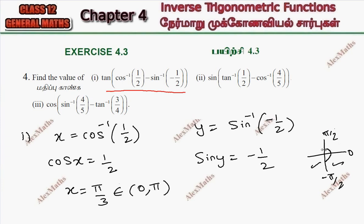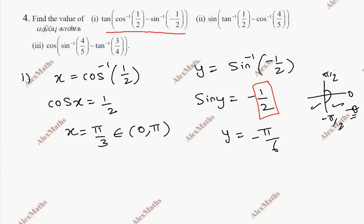So these are the principal values. If we have this quadrant, we have the 4th quadrant and we have minus theta. In the negative sign, we have π/6 as the sin angle. Y is π/6, but 4th quadrant is minus theta. So minus π/6 is equal to minus π/6.